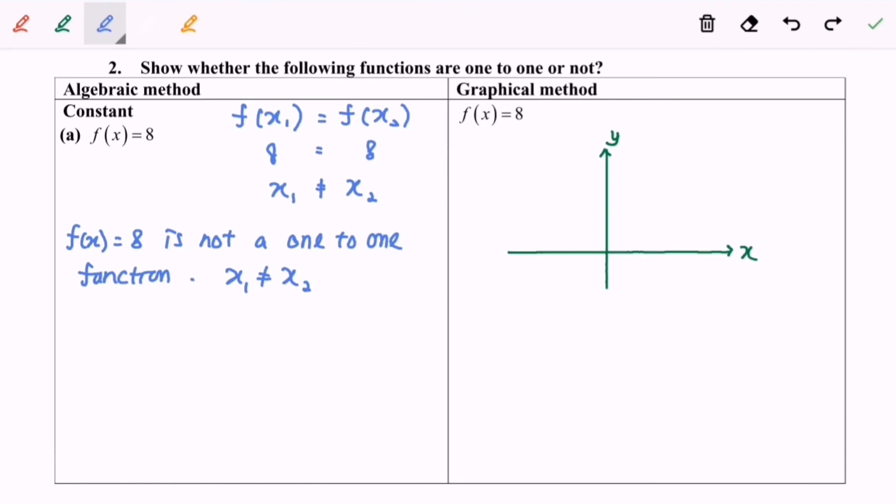So now I'm going to use the graphical method to determine whether the following function is one-to-one or not. Given we have f(x) equals eight, as we all know, f(x) actually equals y. So here we have y equals eight, which is a horizontal line. Now I'm going to illustrate the situation.